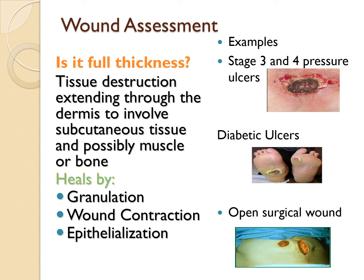We also need to determine if a wound is full thickness. Full thickness wounds are tissue destruction extending through the dermis to involve the subcutaneous tissue and possibly muscle and bone — these are the deep wounds. They don't heal overnight: the wound needs to fill up with granulation tissue, then the wound needs to contract, and finally we have re-epithelialization or resurfacing of the wound. There are many different types of full thickness wounds: stage 3 and 4 pressure injuries, diabetic ulcers, open surgical wounds, and traumatic wounds.